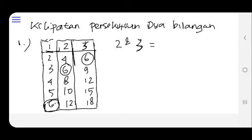Kemudian angka berapa lagi yang sama? Angka 8 disini tidak ada, angka 10 di angka 3 tidak ada. Di angka 12, nah ada angka 12 disini. Berarti kelipatan persekutuan angka 2 dan 3 yaitu 6 dan 12.